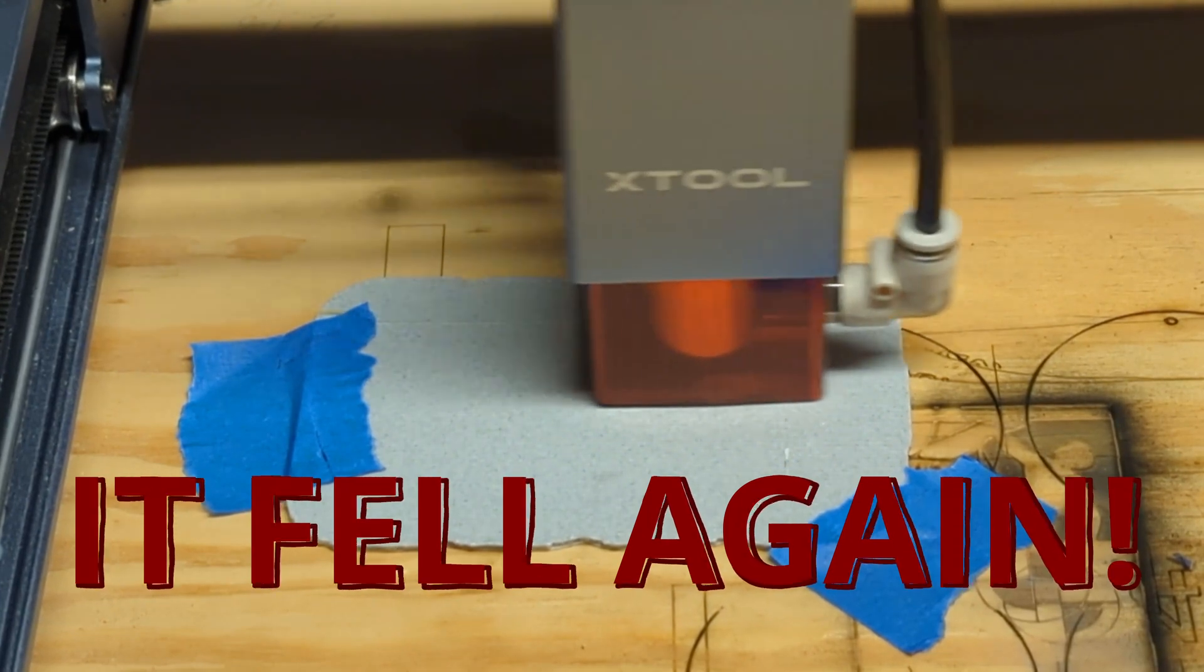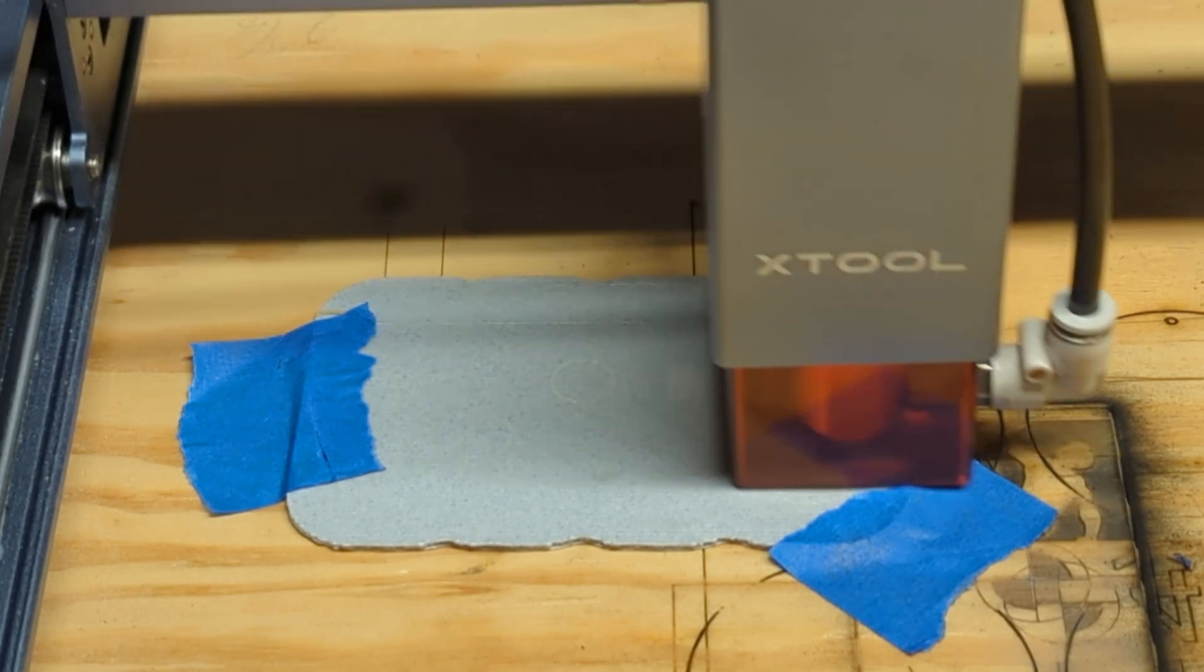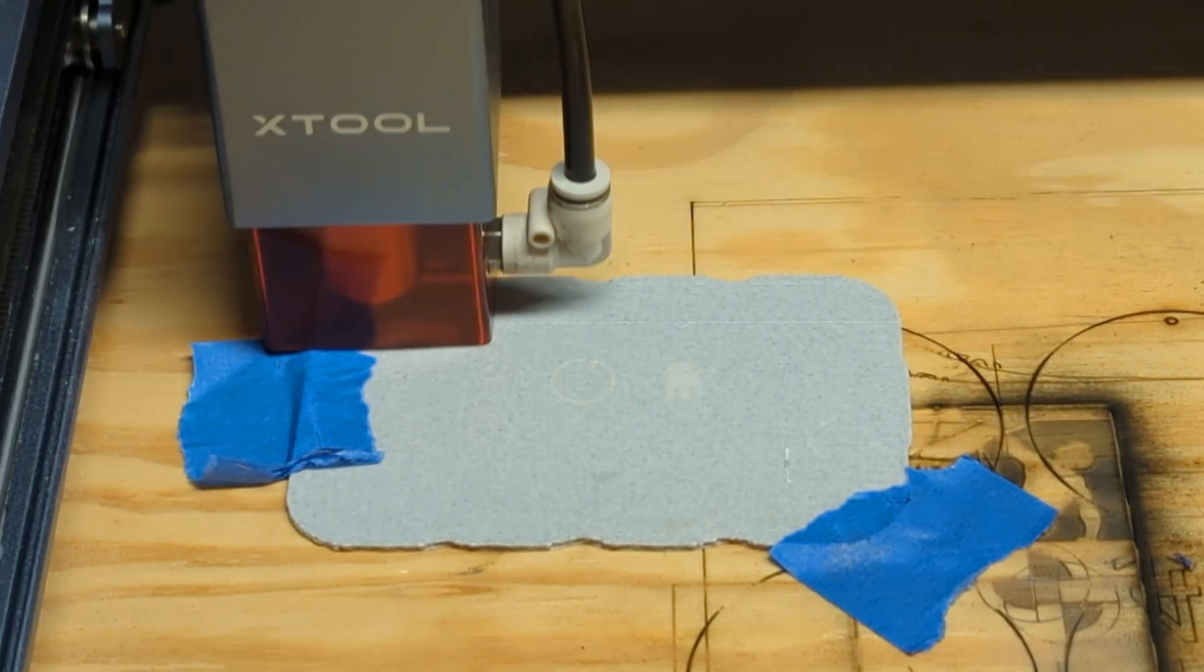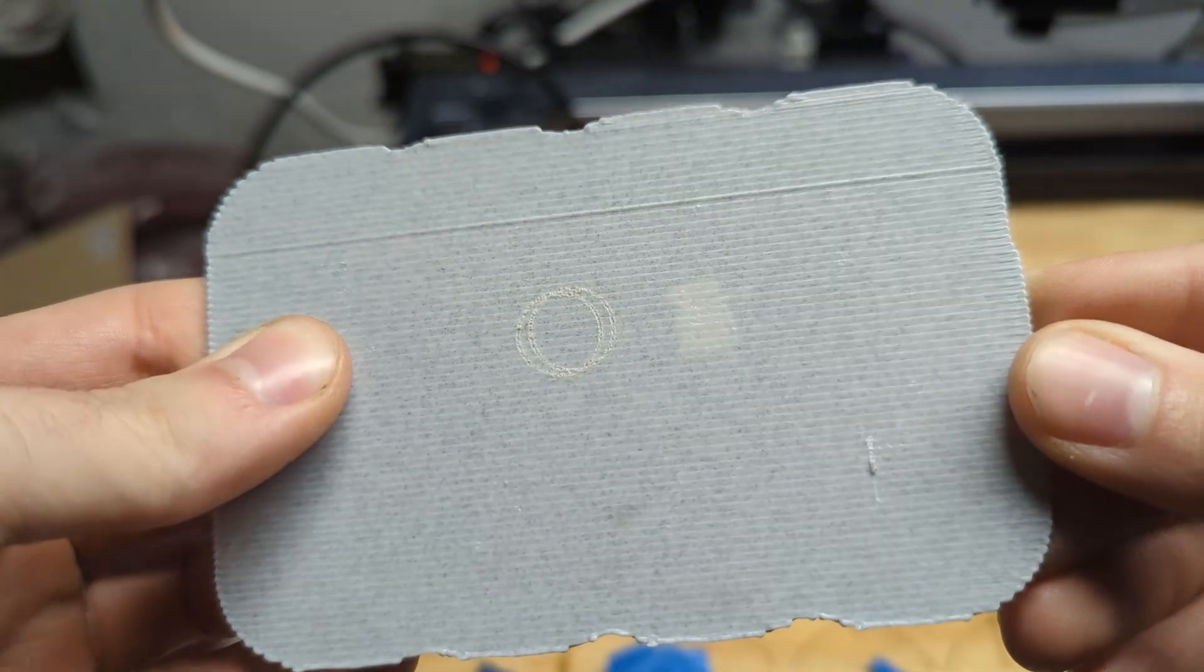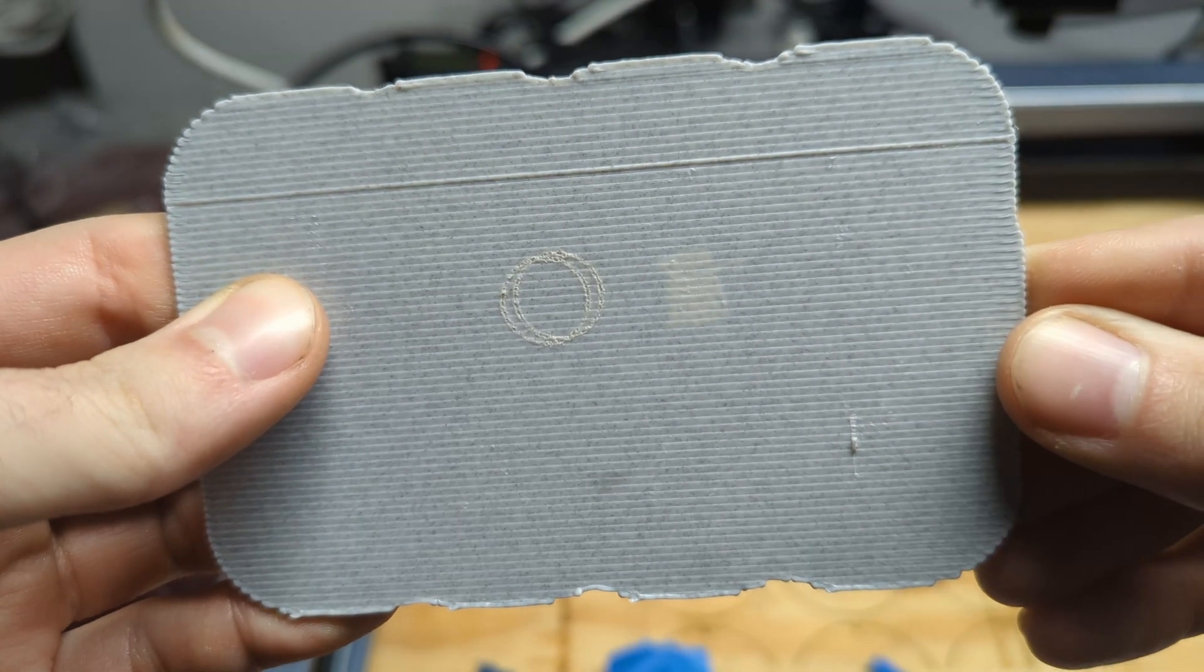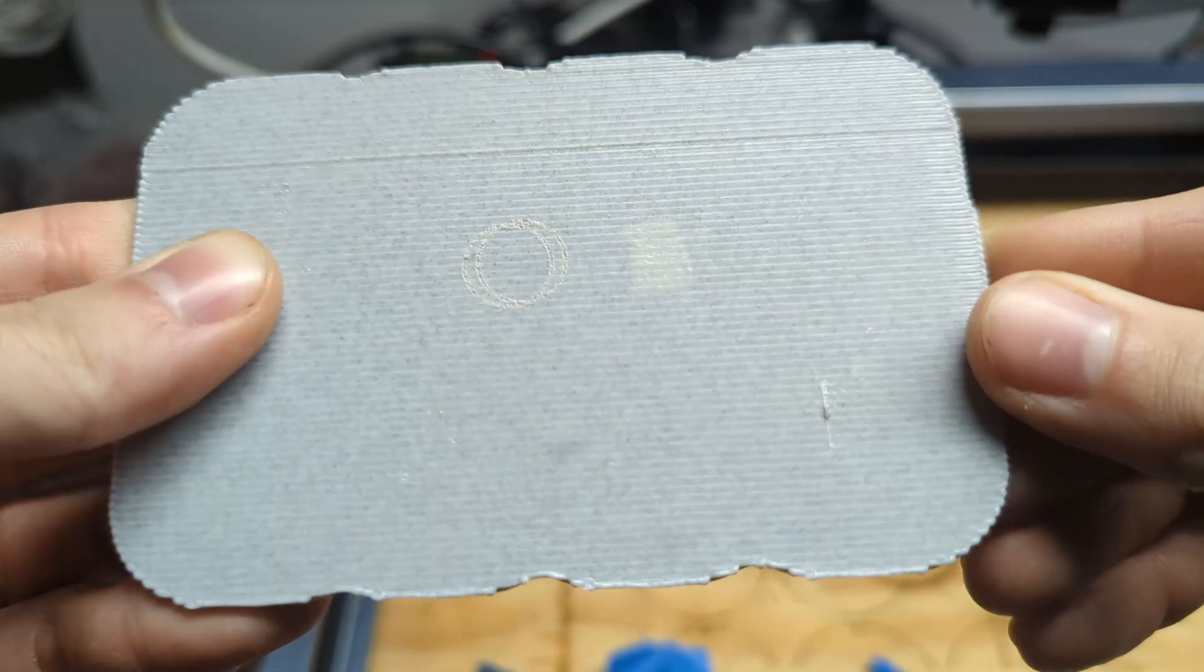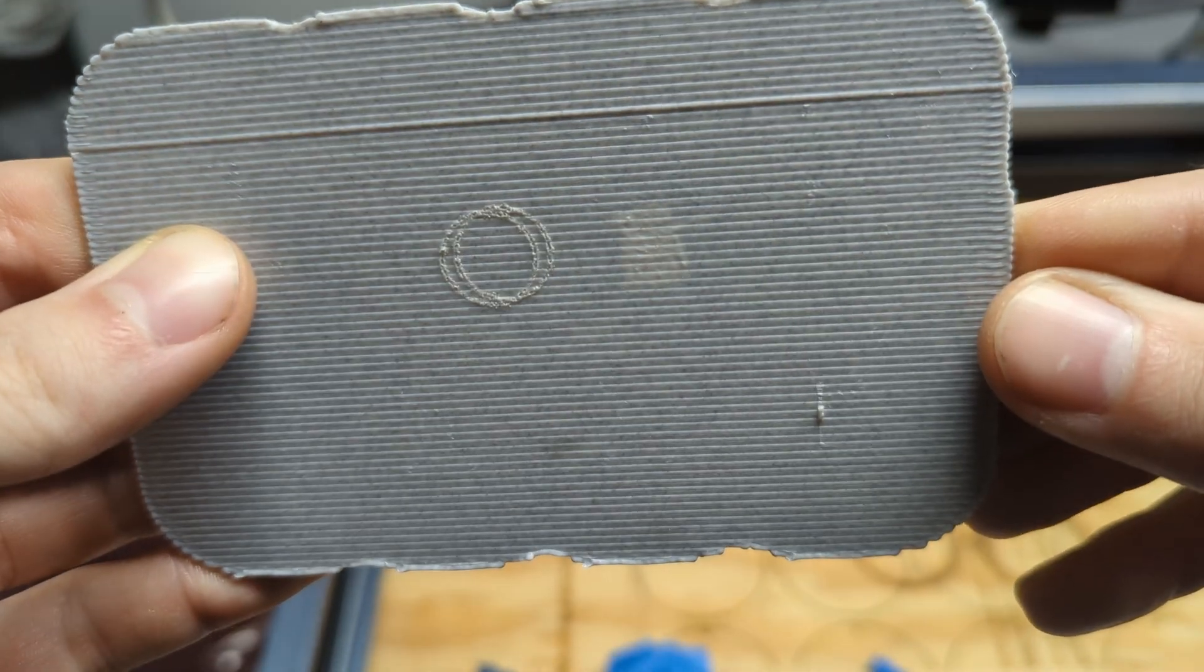The head of the laser fell down again, not all the way, but enough to where if you were working on something nice, you would probably ruin it. So you can mark PLA. I don't think you're going to cut through it, maybe with a lot of gumption, a lot of passes. The engraving also didn't turn out very detailed, and I'm not 100% sure why.